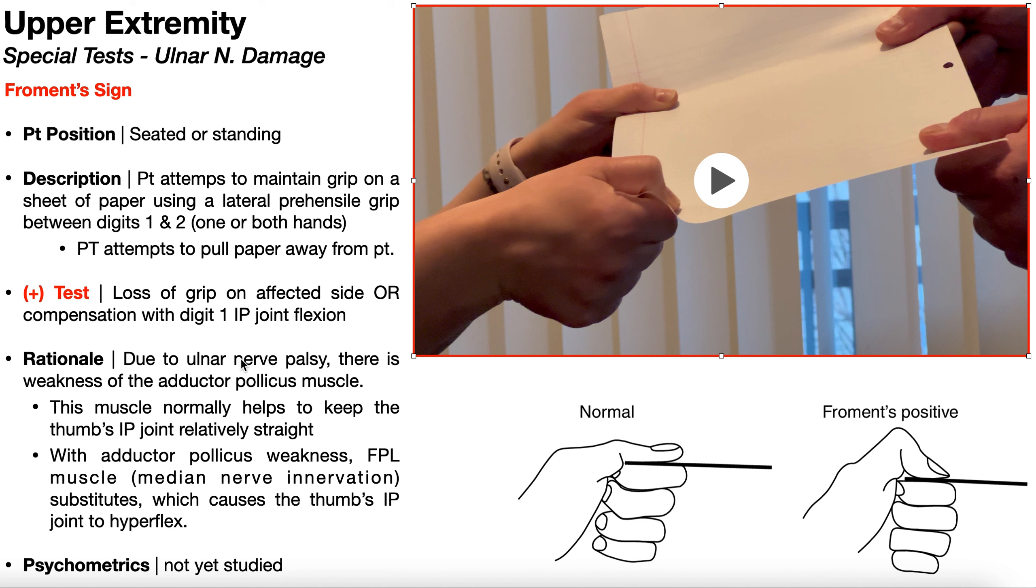And this is most likely due to ulnar nerve palsy or some kind of damage to the ulnar nerve. And when you have that ulnar nerve damage, there's weakness of the adductor pollicis muscle. Remember that the intrinsic muscles of the hand are innervated by one of two nerves, either the ulnar nerve or the median nerve. So if you have ulnar nerve palsy, most or all the muscles of the hand that are innervated by the ulnar nerve are going to be weak. And in particular, the culprit here is the adductor pollicis muscle. So this muscle, in addition to adducting the thumb, normally helps keep the thumb's interphalangeal joint relatively straight. But obviously, this muscle is weak due to damage to its innervating nerve.